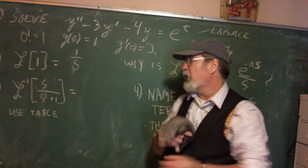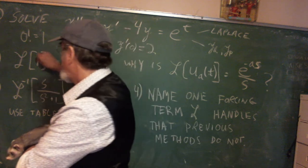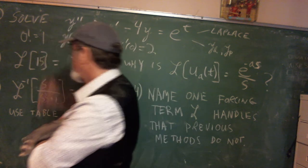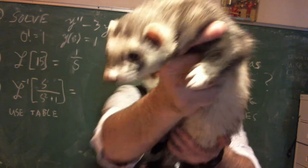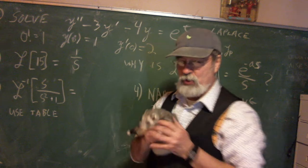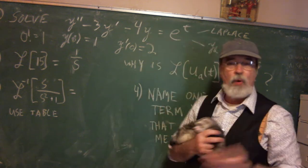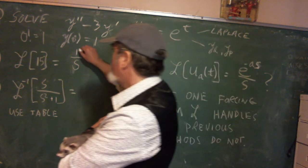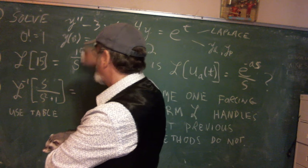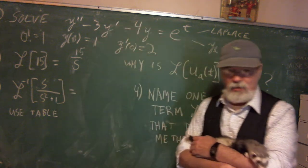So what would be the Laplace transform of 15? Coco Banana says that's just 15 times one. So this would be 15 times one over S, which would be 15 over S. So that's not so scary.